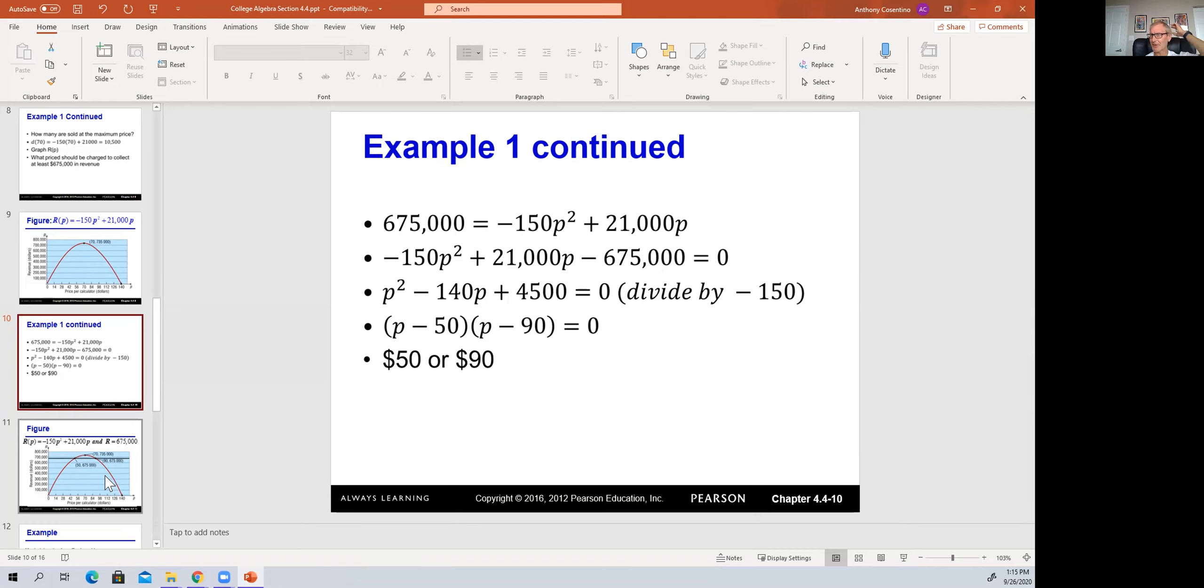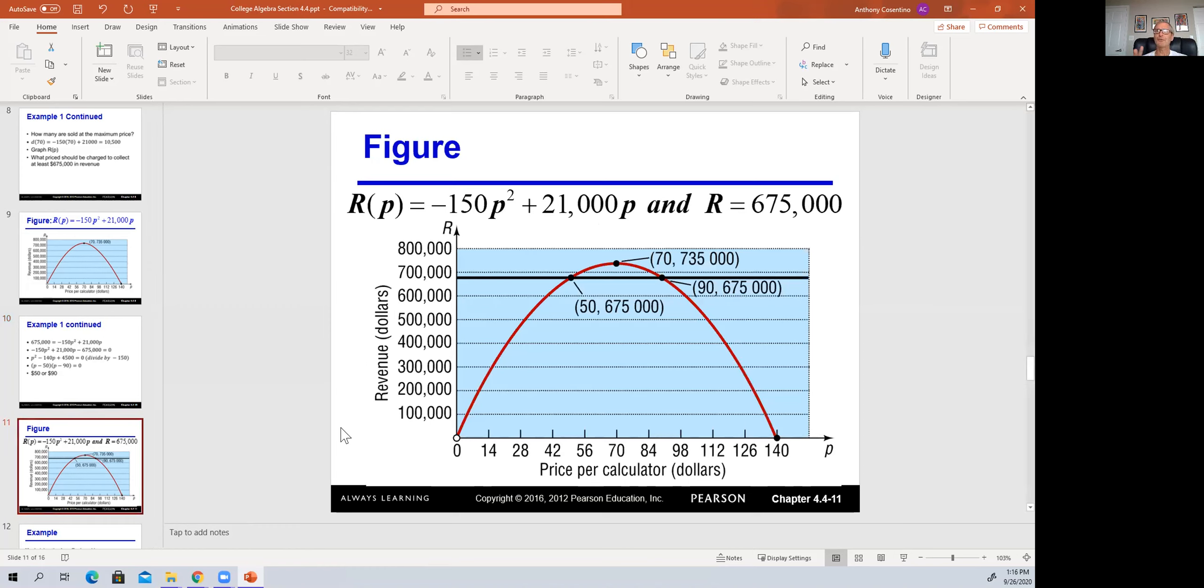But if you go back to our graph, you can see that because it's a quadratic, the axis of symmetry again is the vertical line cutting right through the vertex. And if you go to the right or to the left, they should get the same y value. And you could see, we moved 20 units, $20 to the right and added 20 to 70 to get 90 and we get $675,000. And you could see, we also moved 20 units to the left or $20 to the left at $50. We still get $675,000.